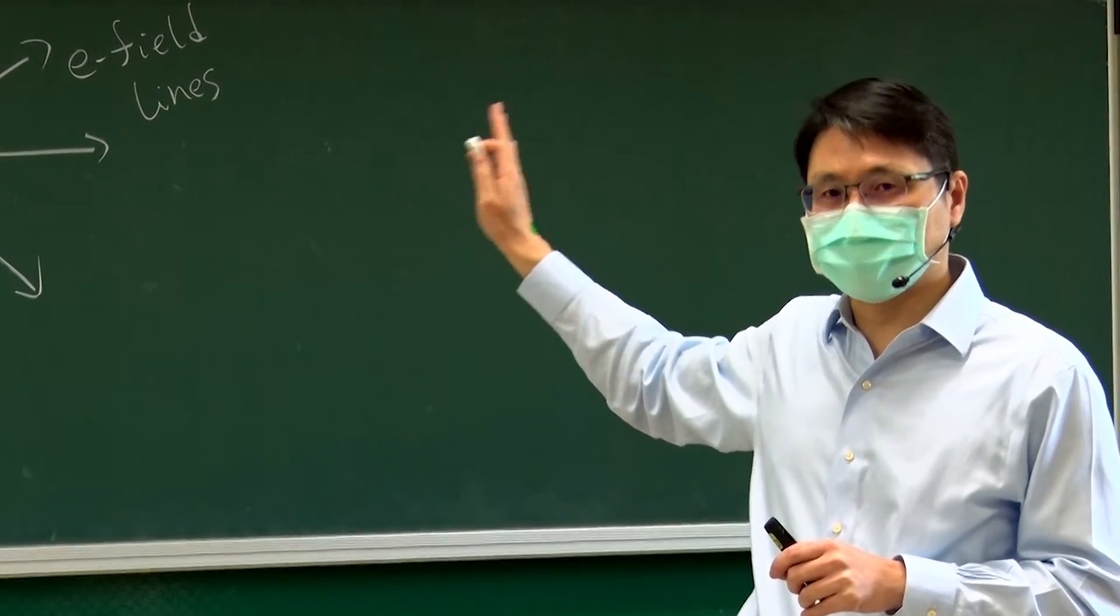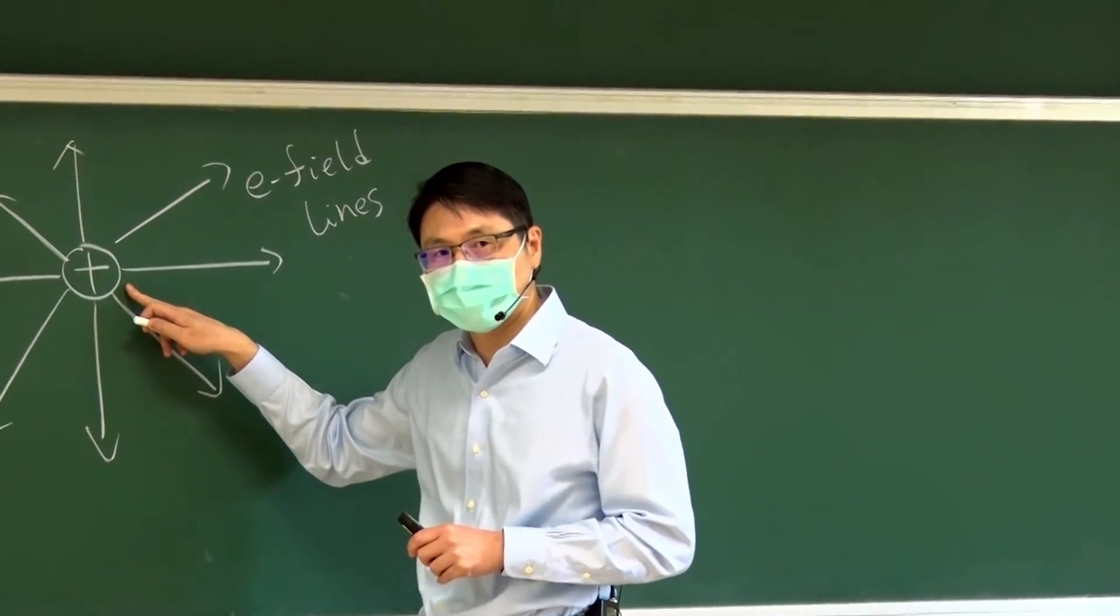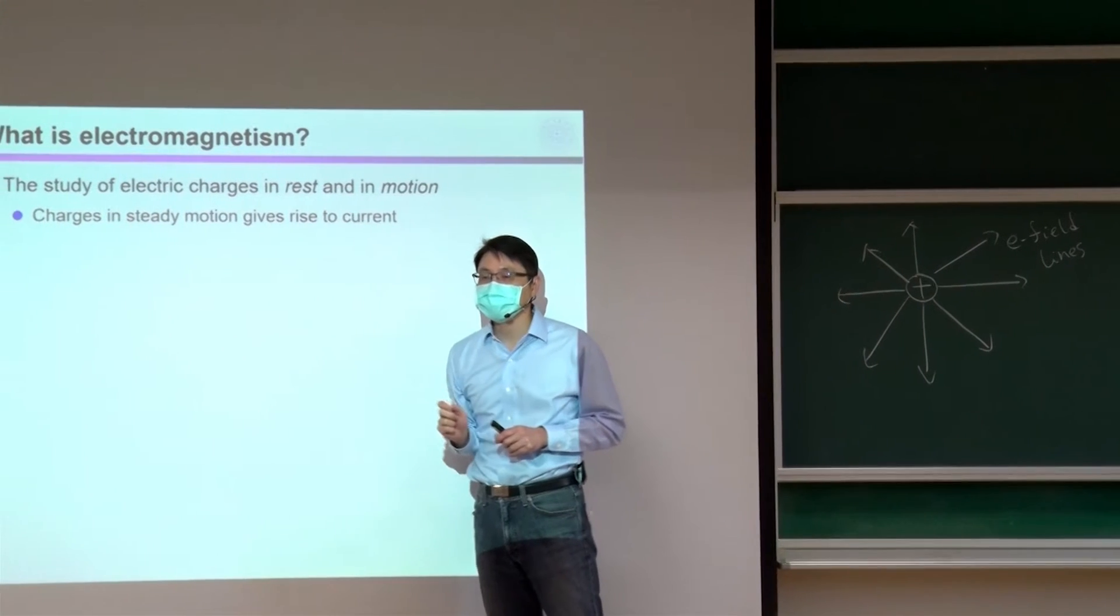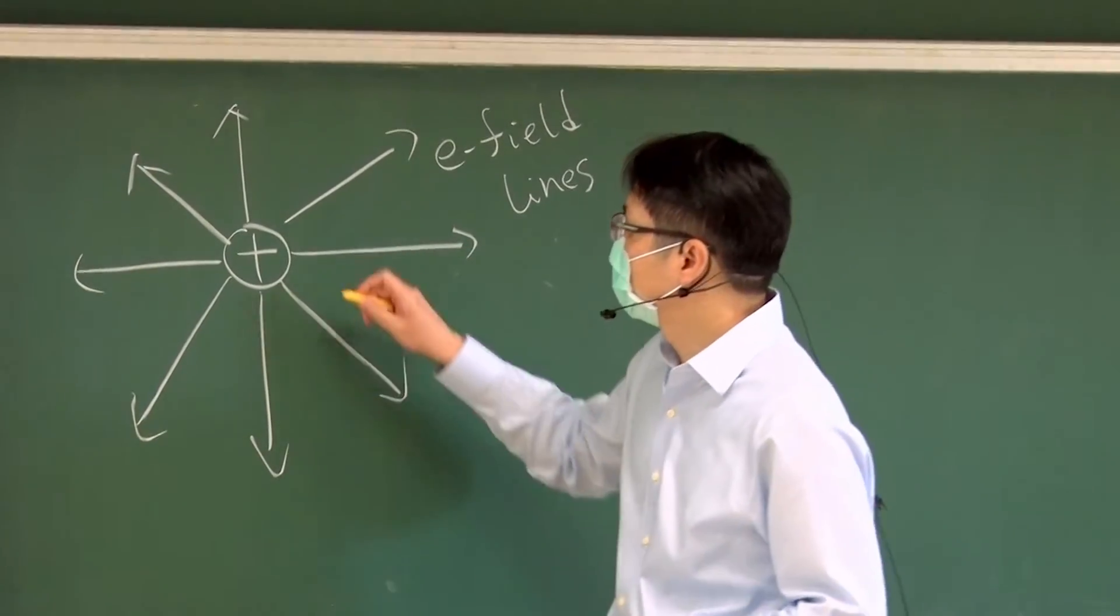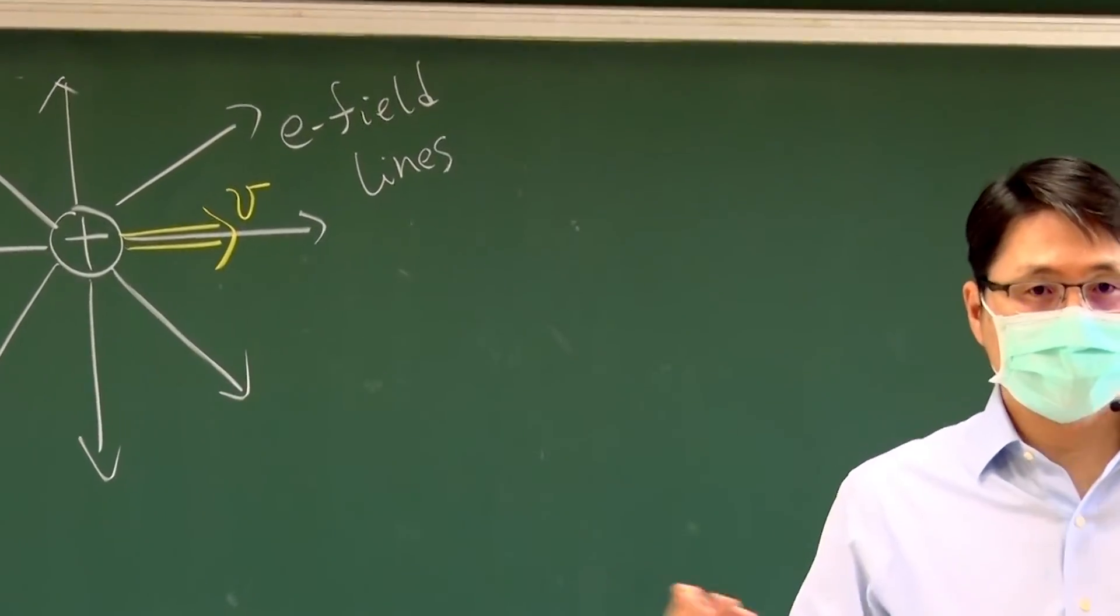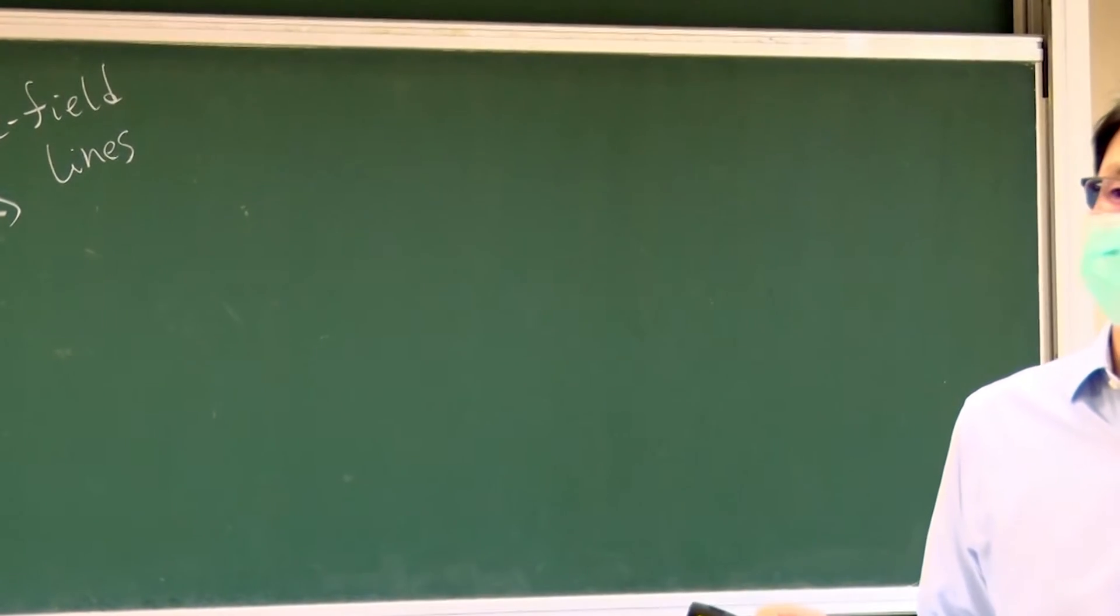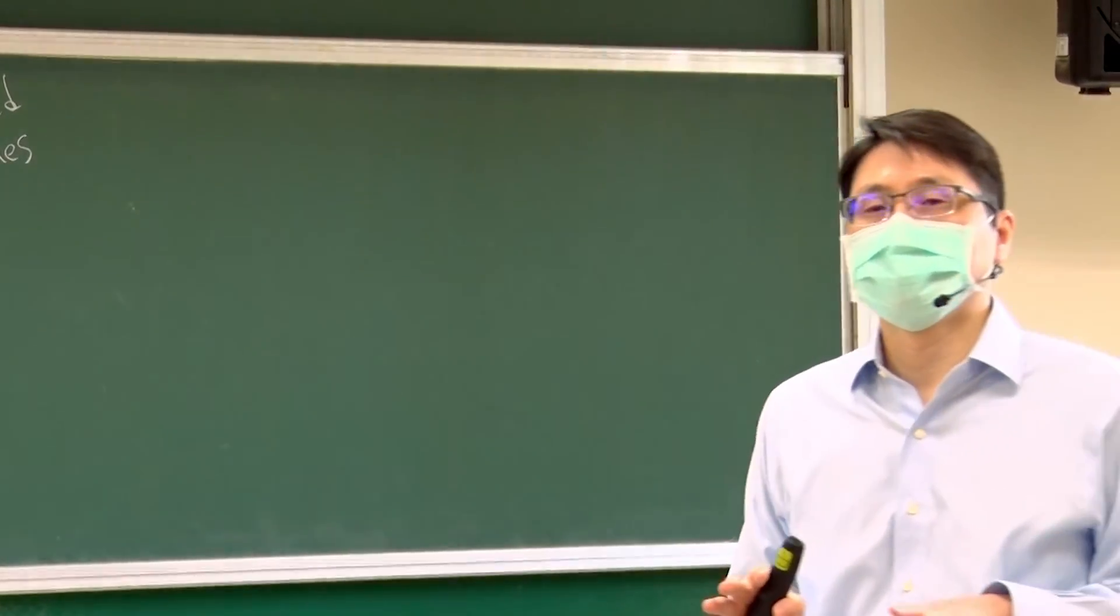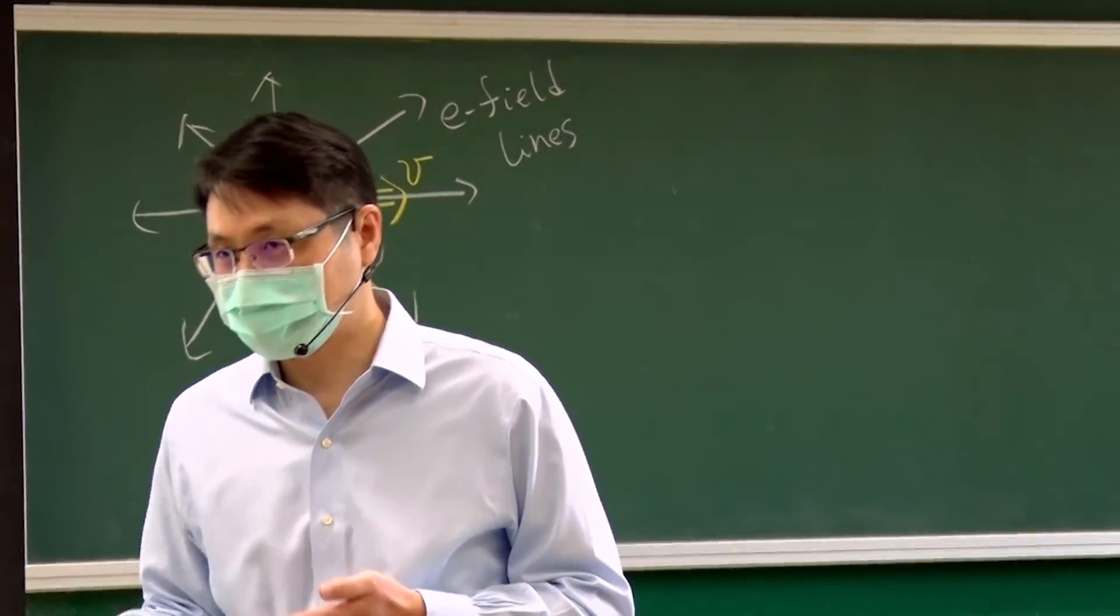But that kind of picture is only true when the charge is not moving. So what is going to happen when somehow you find a way to make the charge move, move at certain velocity, constant or time-varying? What is going to happen in that case? For that, you probably don't know the answer right now. But you can be rest assured, by the end of the semester, you will know the answer to that.